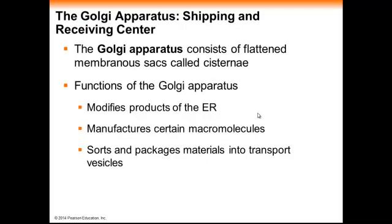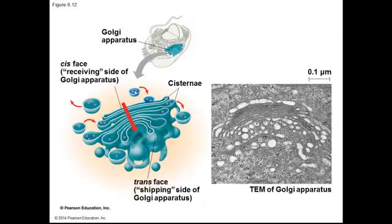When a protein is produced in the rough ER, it is sent to the next set of membranes called the Golgi apparatus. The Golgi receives these proteins through vesicles and modifies them to make them functional. Proteins produced in the rough ER are nonfunctional or not ready to go, so what the Golgi does is modify these proteins, add things to them, sort and package them, and then place them into transport vesicles. Here we can see the Golgi receiving a vesicle from the ER, with proteins being modified throughout the Golgi and then a transport vesicle produced and sent off.